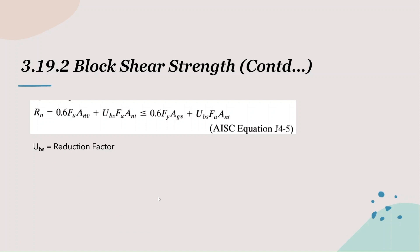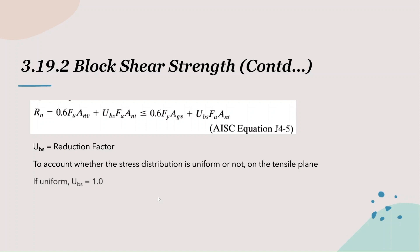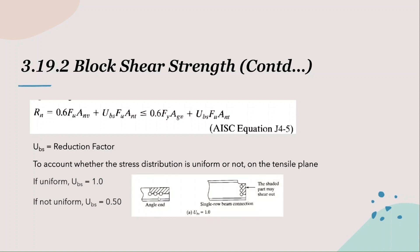Let's talk about the reduction factor UBS. It is used to account for whether the stress distribution is uniform or not on the tensile plane. If the stress distribution is uniform, UBS equals 1. If the stress distribution is non-uniform, UBS equals 0.5. AISC gives us certain guidelines for determining this. For angles, gusset plates, and coped beams with one line of bolts, UBS is equal to 1.